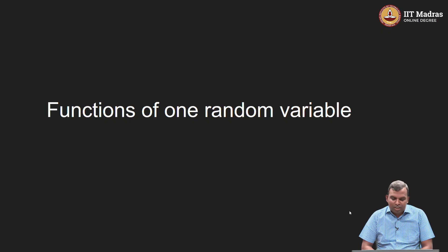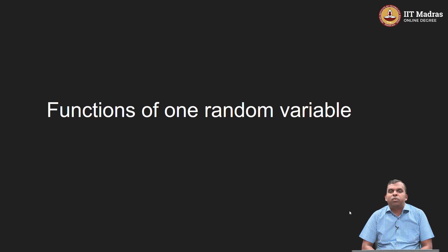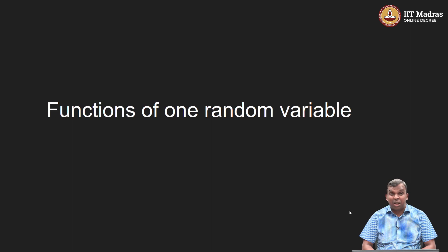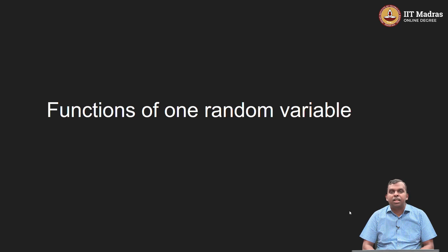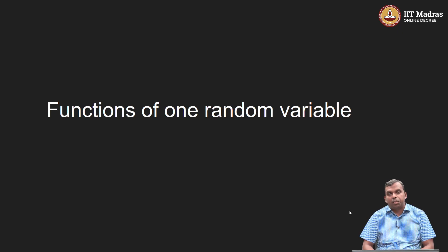Hello and welcome to this lecture. We saw the definition of a random variable, a discrete random variable. We saw how in various situations the most crucial thing is finding the range and PMF of the random variable, and then you can work with it. We saw several different distributions, commonly occurring distributions and how to work with them. In this short lecture, we are going to look at functions of one discrete random variable.